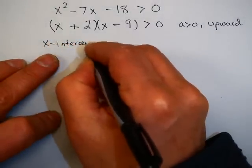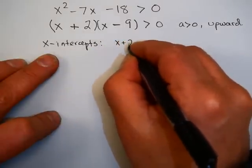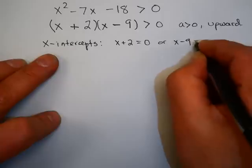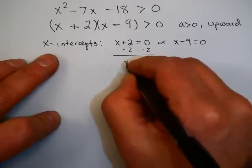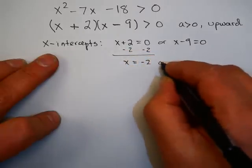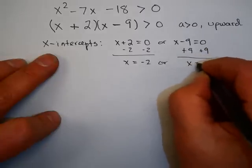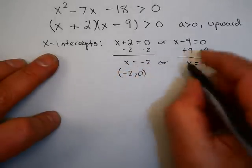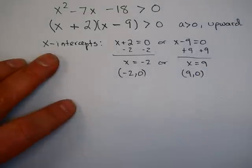Now, for my x-intercepts, that gives me (x + 2) = 0, or (x - 9) = 0. Subtract 2 from each side. That gives you x = -2. Or add 9 to each side. That gives you x = 9. So my x-intercepts are (-2, 0) and (9, 0). And I know that the graph goes up. So I'm going to draw a real quick sketch here.